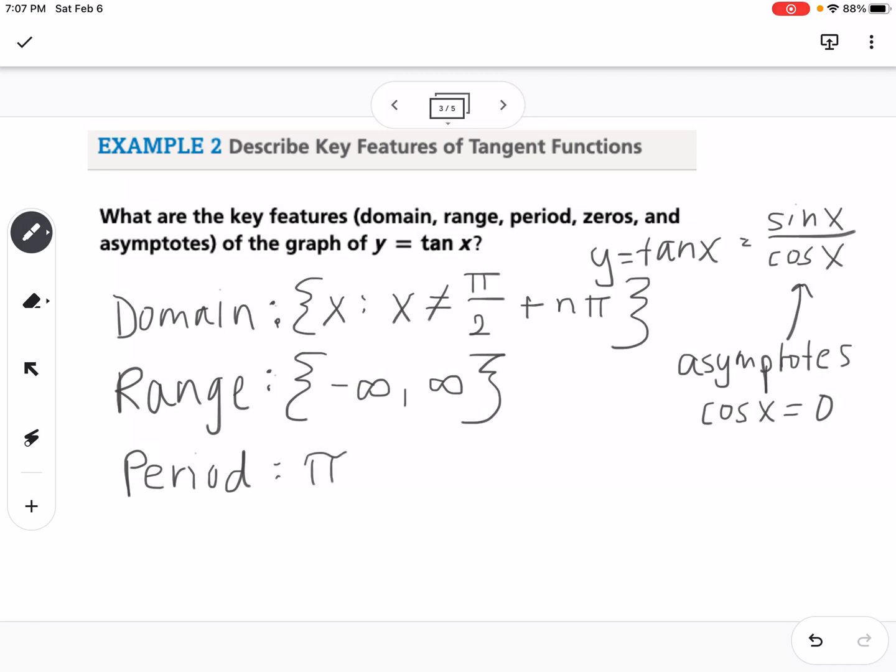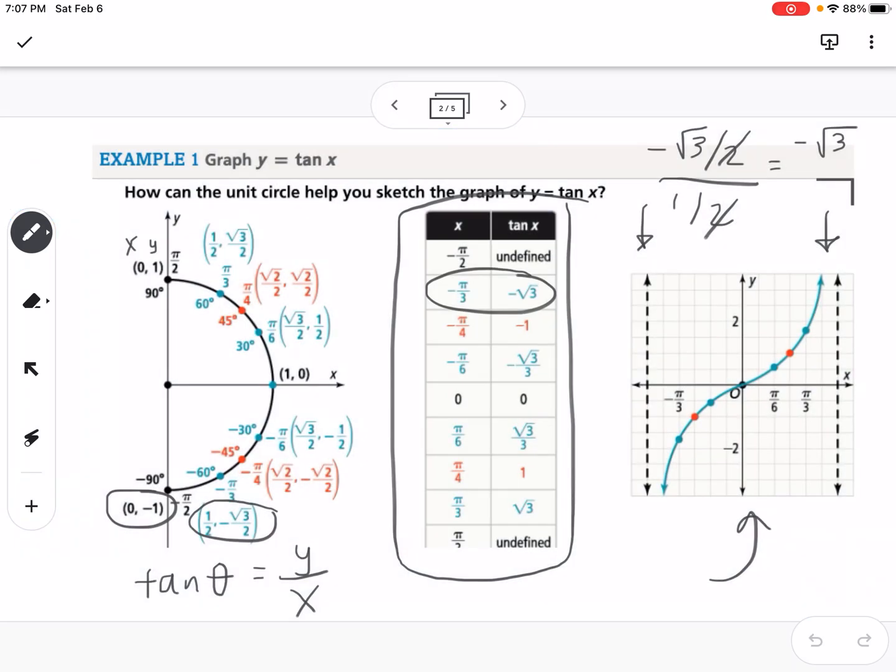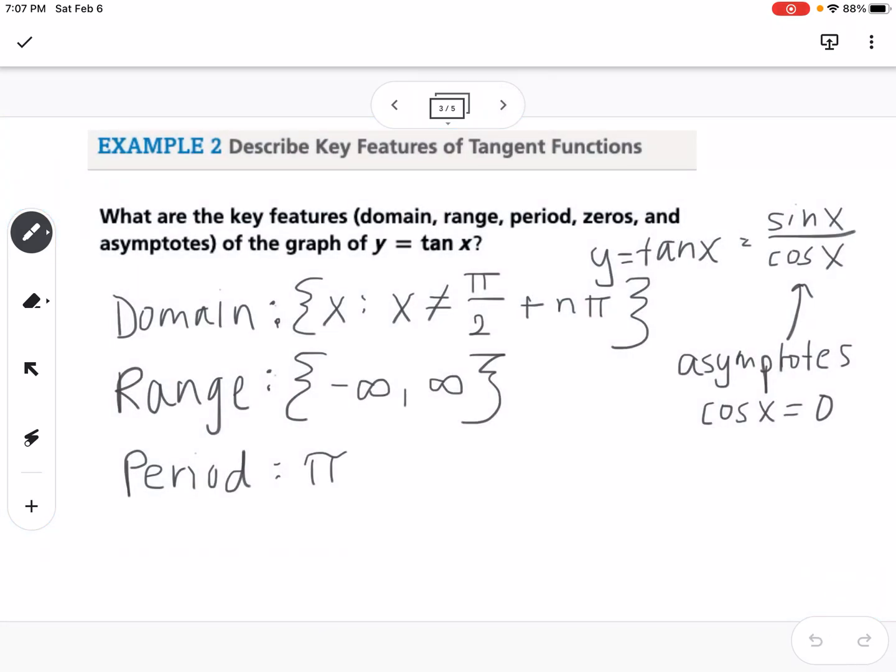So you'll notice this is different than sine and cosine. So if we look back at the previous example, so going from negative pi over 2 to positive pi over 2 is one period of tangent. So that's a distance of pi, and so the period is going to be pi.